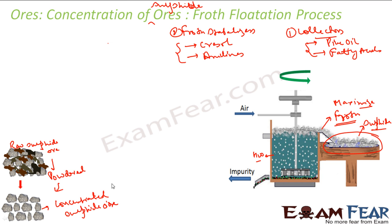That is the froth flotation process — used for concentration of sulfide ores. The key logic is that sulfide particles stick to the froth, which we collect separately to get a highly concentrated sulfide ore. The impurities are generally heavier, so they settle down and are removed as gangue.